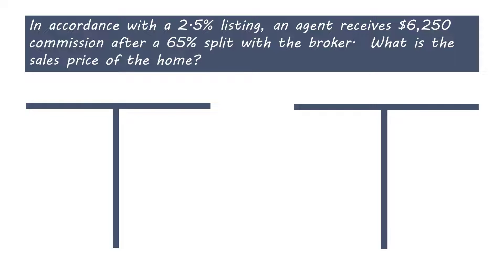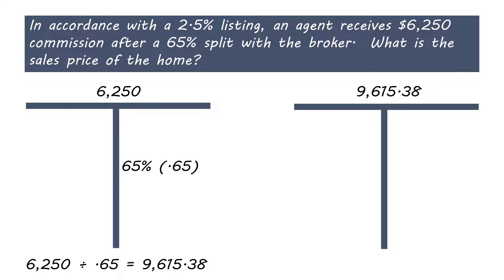We know the agent received a 65% split that represented $6,250. Here we have the part and the percentage, and we need to determine the total or the whole. The part — $6,250 — will go on the top of the bar. The rate of 65% will go on the bottom right. And according to the T-bar, we divide. $6,250 divided by 65%, or 0.65, equals $9,615.38.